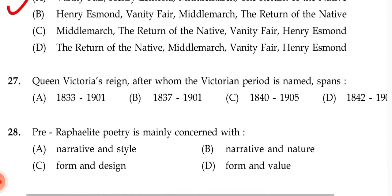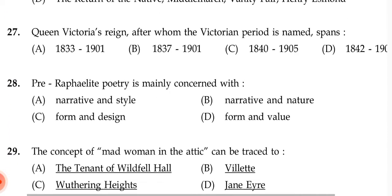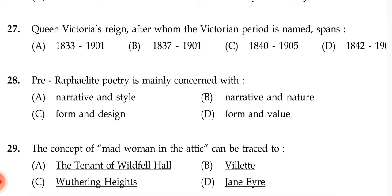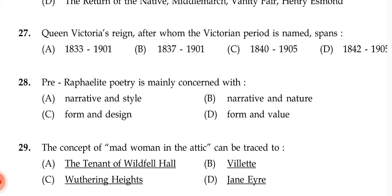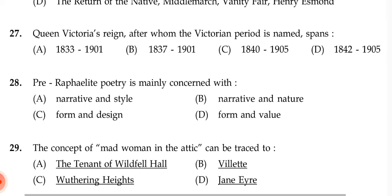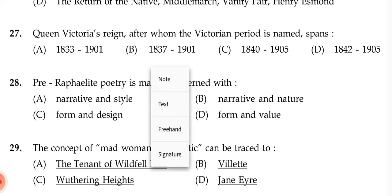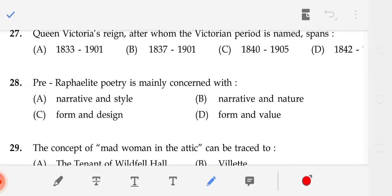Queen Victoria's reign, after whom the Victorian period is named, spans — the correct answer is B — 1837 to 1901.